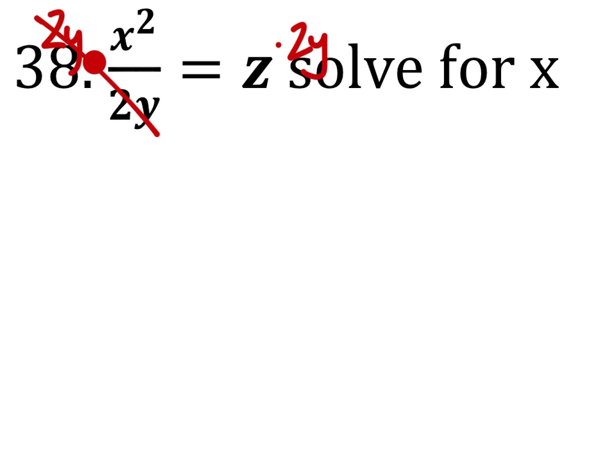These ones cancel out and we have x squared equals z times 2y. Like these.